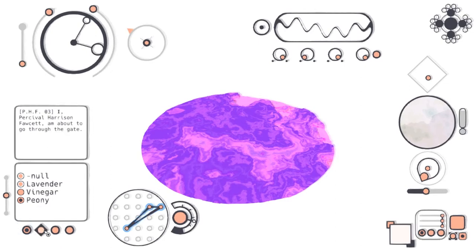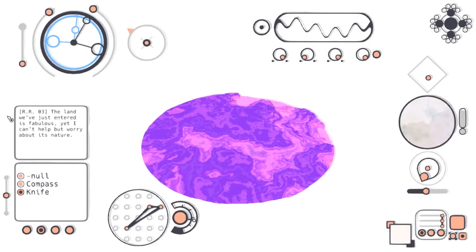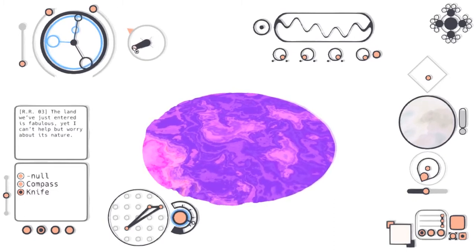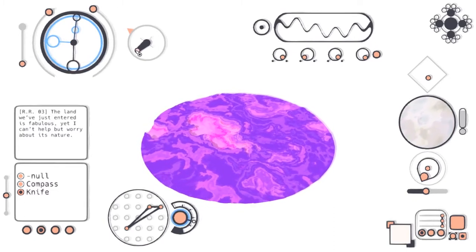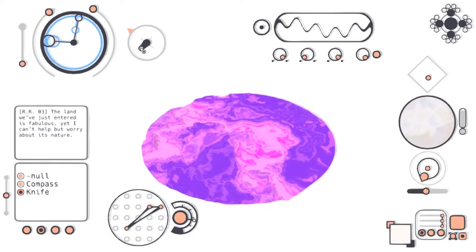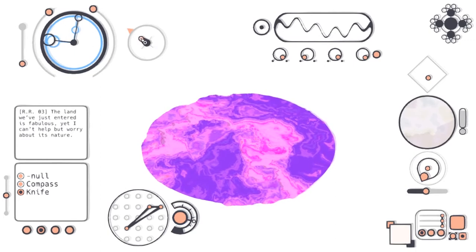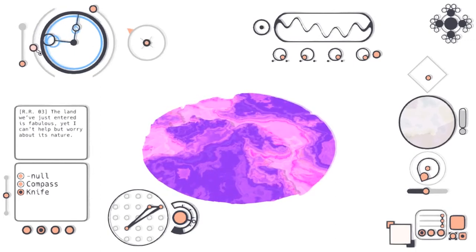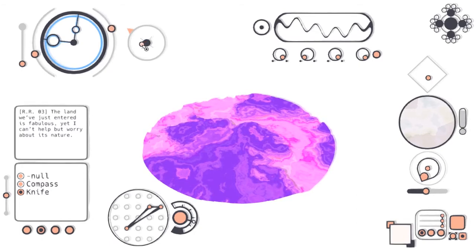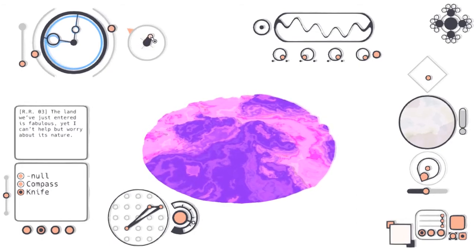What did we find? Knife. The land we've just entered is fabulous, yet I can't help but worry about its nature. I want to move until those little circles line up. I'm not even looking at the map thing right now, actually. I'm just... There. Not quite right, is it? Back that way.